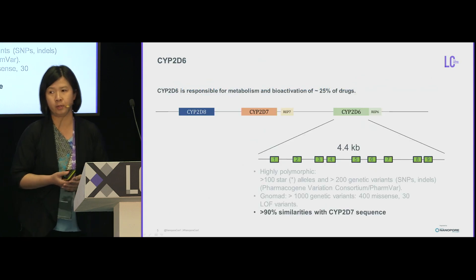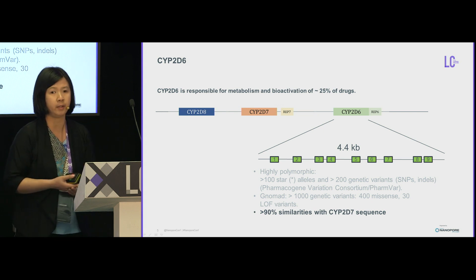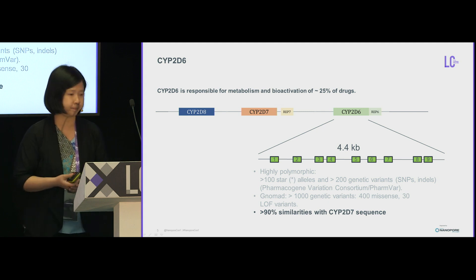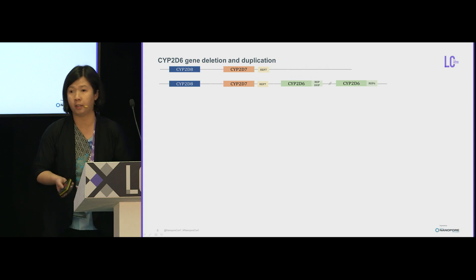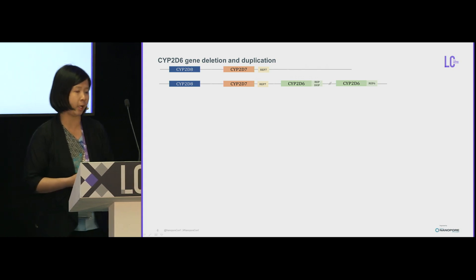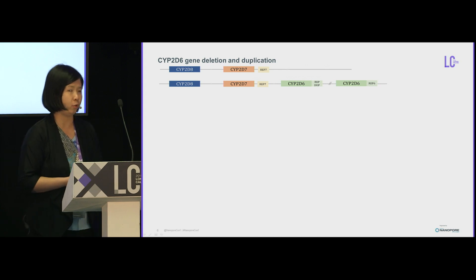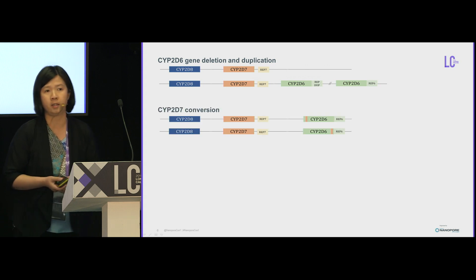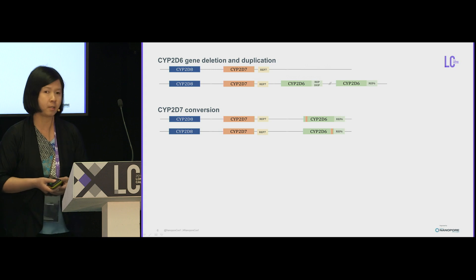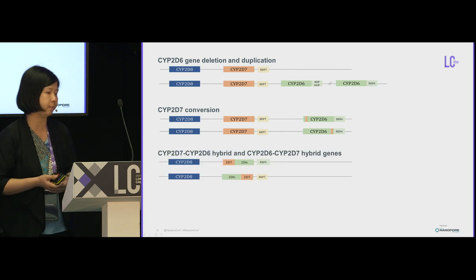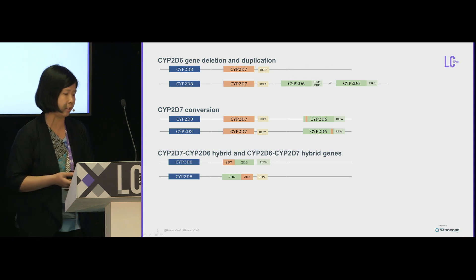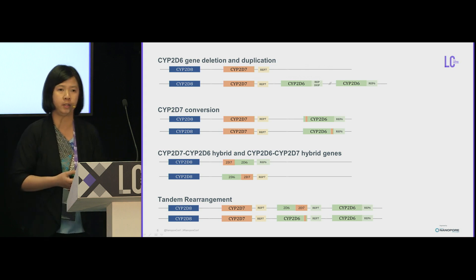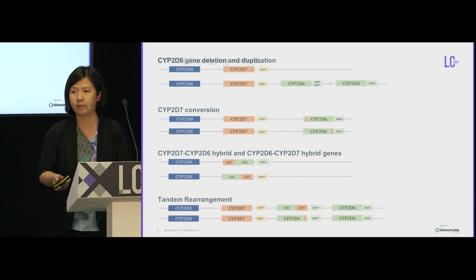Other complexities of the CYP2D6 gene arise because it shares more than 90% similarity with the CYP2D7 pseudogene, and these similarities span large fragments of the gene. In addition, the gene is affected by structural variation — the whole gene can be deleted, duplicated, or even multiplied, with up to 13 copies reported. There are also small sequence conversions between the two genes, gene hybrids both ways, and tandem rearrangements where several copies of the gene are identical to each other.